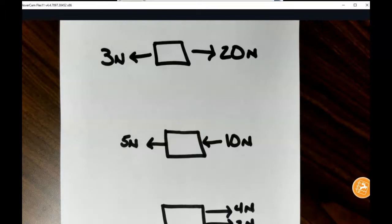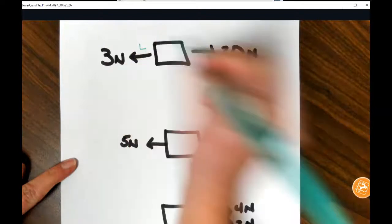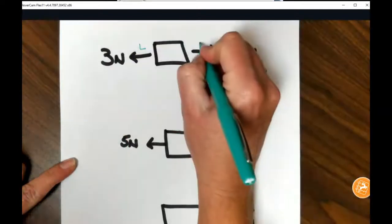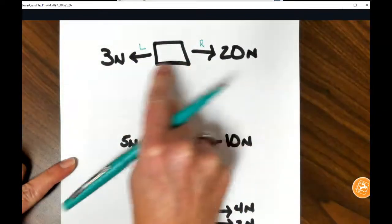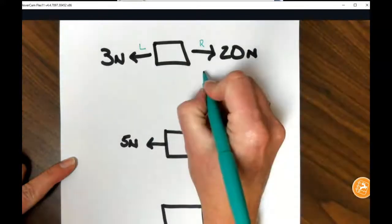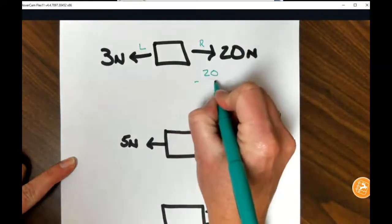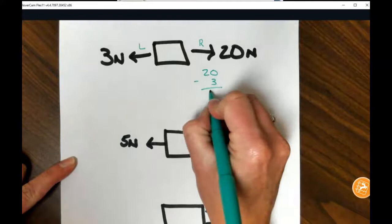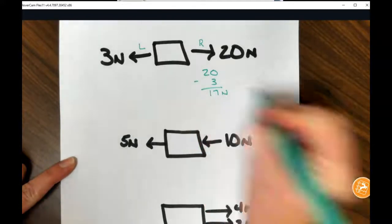So if we look at different scenarios, in our first one, we have three newtons of force pulling to the left and 20 newtons of force pulling to the right. Because these arrows are going in opposite directions, we would need to subtract. So we would get a net force of 17 newtons.